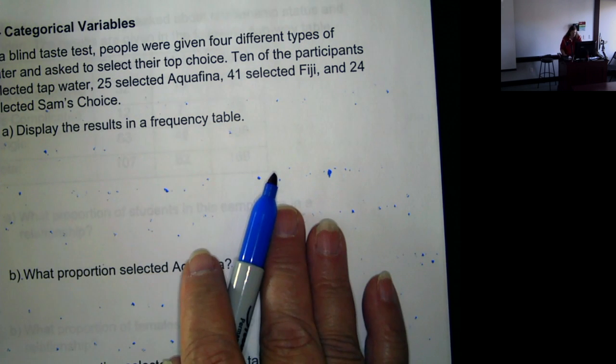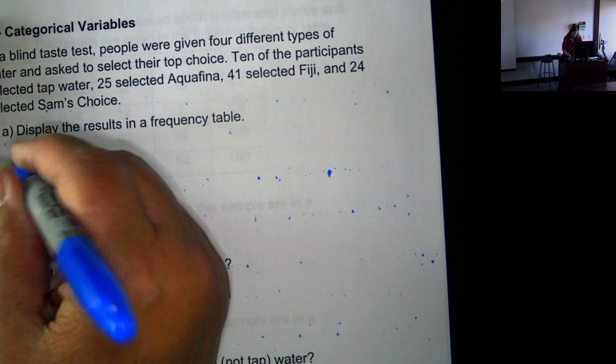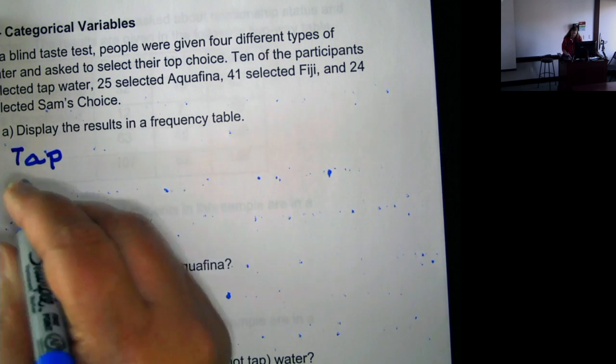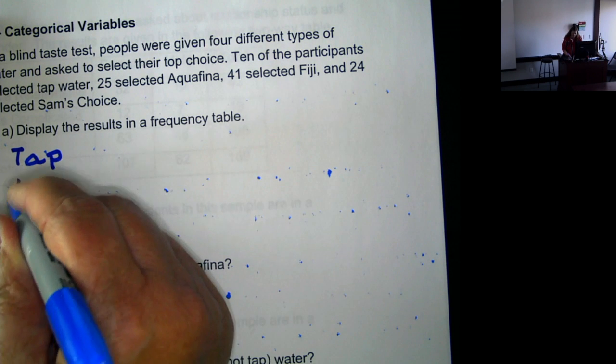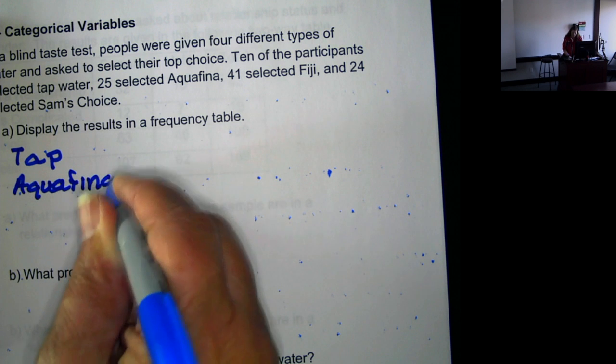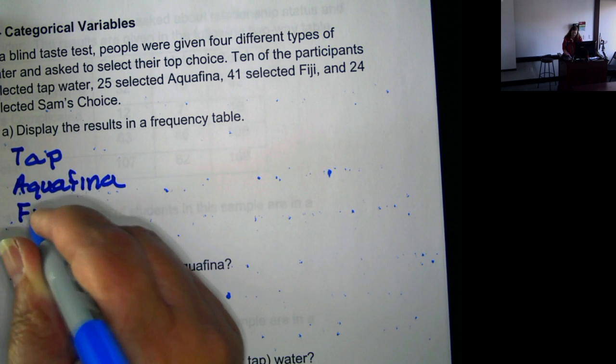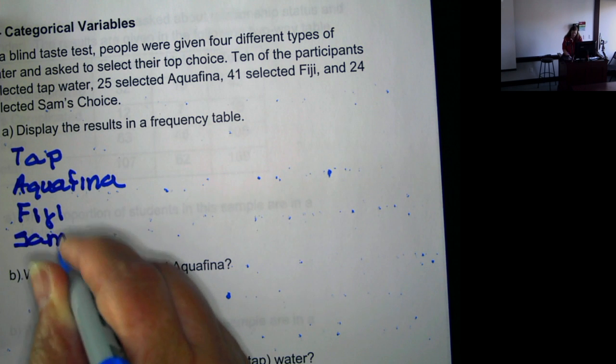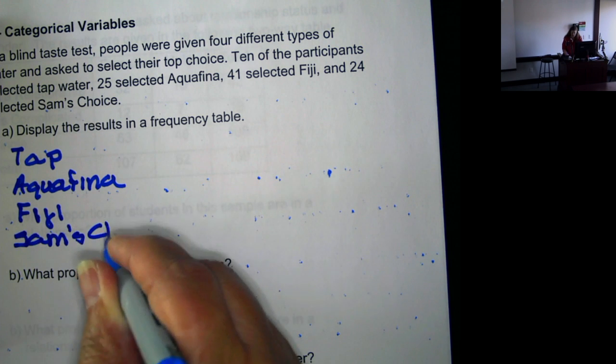So we want to display a frequency table. We're going to list the categories: tap, Aquafina, Fiji, Sam's choice.